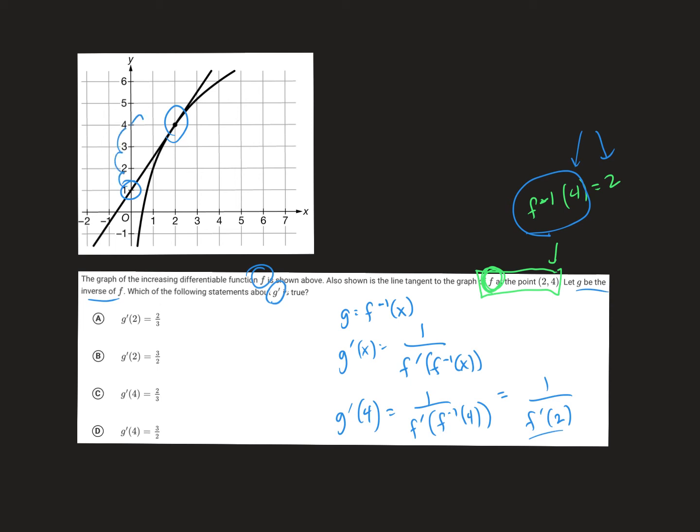up 3, right 2. So, the slope of that tangent line is 3 halves. So, f prime of 2 is 3 halves. And therefore, 1 over 3 halves is 2 thirds.